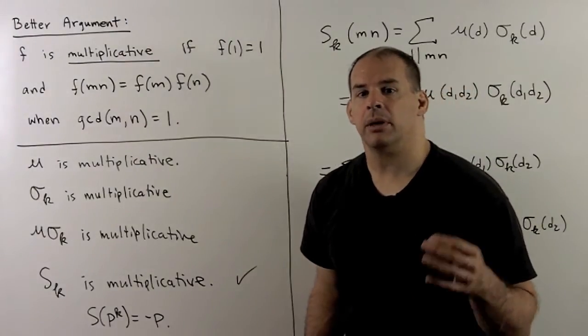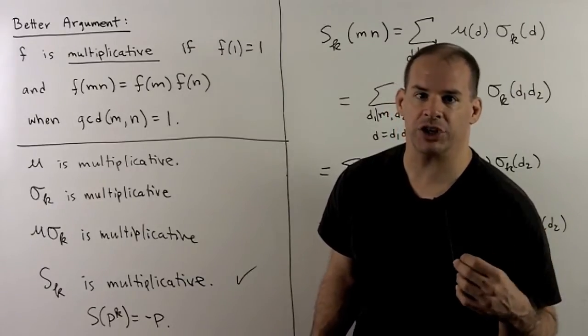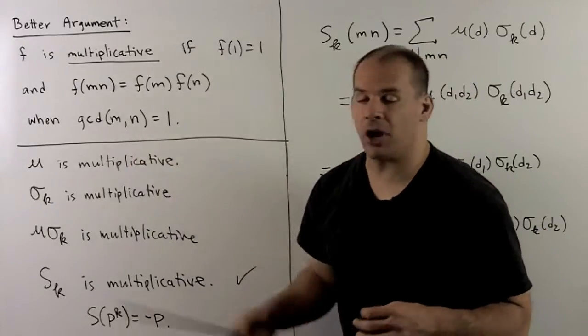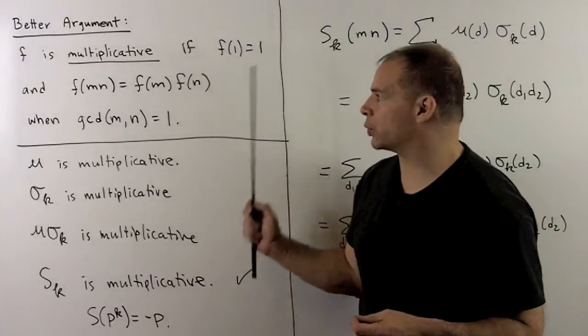Here's a better argument. Better because it handles the general situation. We'll start with the definition. But f, a function of the positive integers, call it multiplicative if f of 1 equals 1.